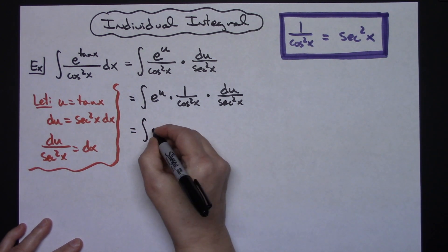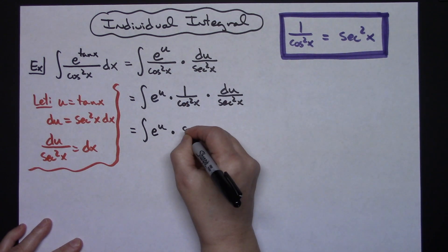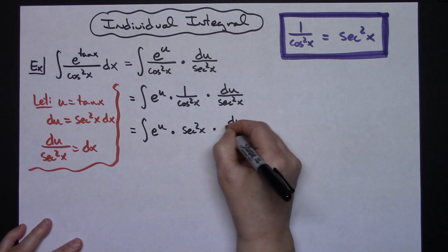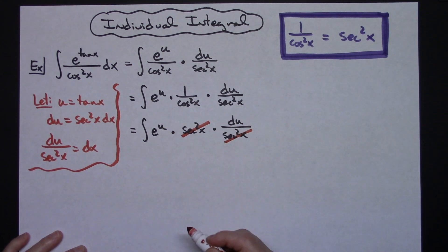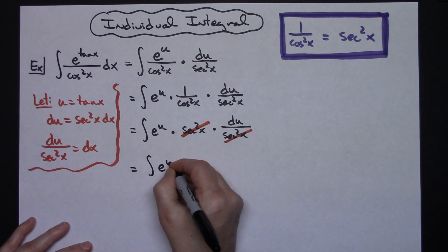Then I'll have the integral of e to the u. Making that substitution, I'll have secant squared x. I'll still have my du over secant squared x. Now hopefully you can clearly see this one is in the denominator, this one is in the numerator. They do cross out. That's going to leave us with the integral of e to the u du.